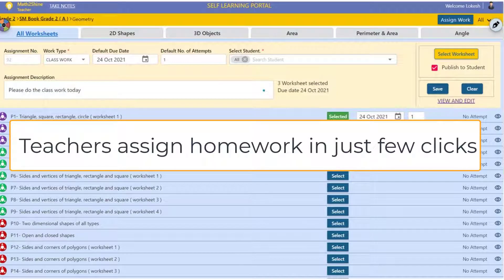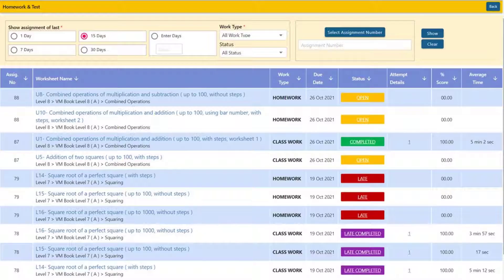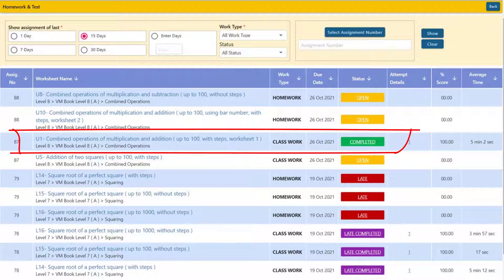Teachers assign homework to students with just a few clicks. Math2Shine has a system of color coding performance and habits. We show on-time work completion in green color.